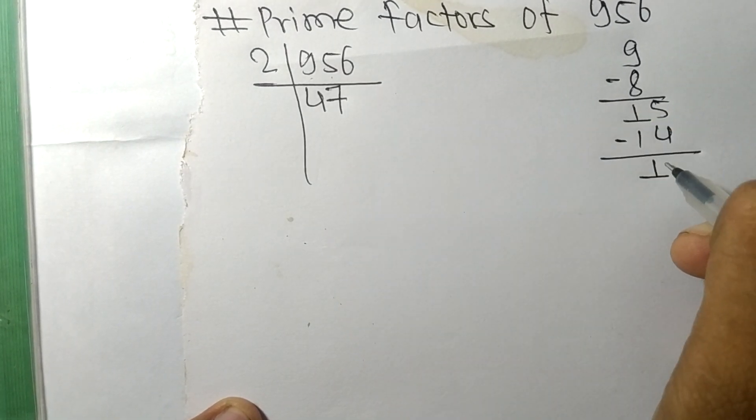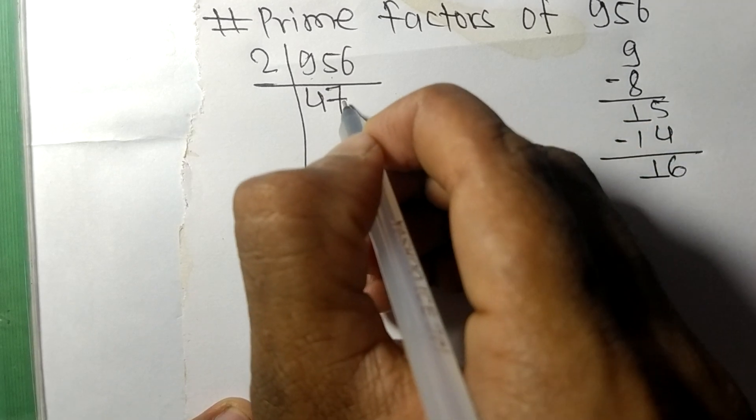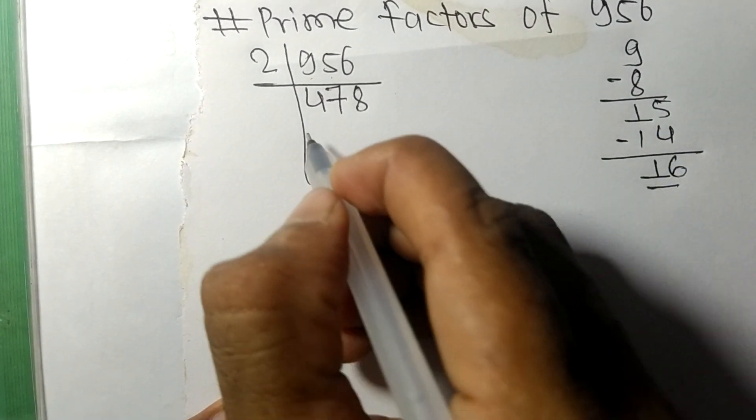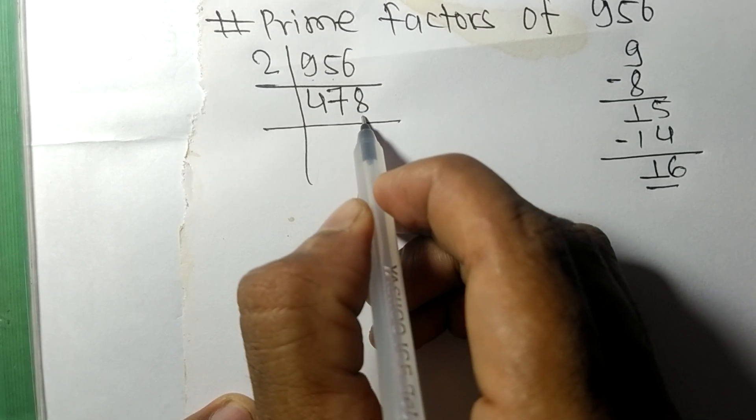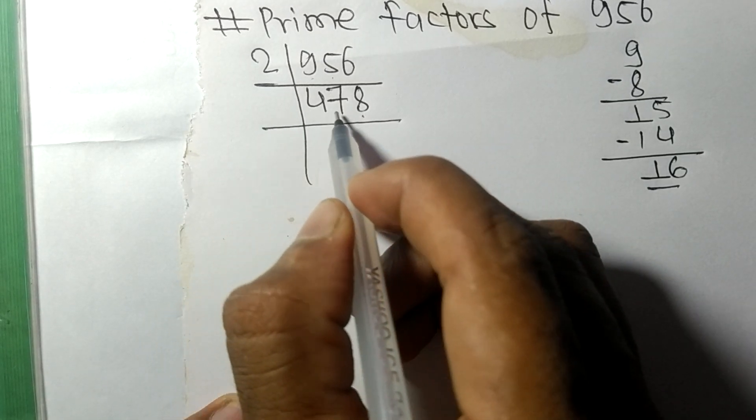This 6, 16. 2 times 8 means 16. Again we have even number 8 at last, so it is exactly divisible by 2.